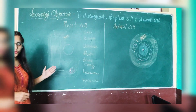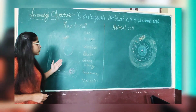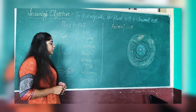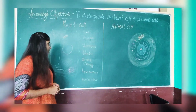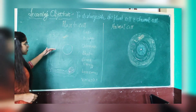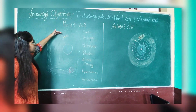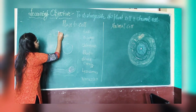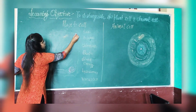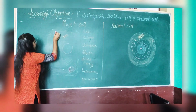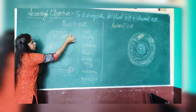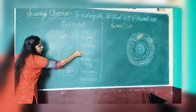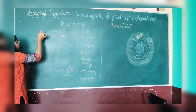In this way, we will be able to distinguish between a plant cell and an animal cell. Starting with the structure of a plant cell, the main difference between the structure of a plant cell and animal cell is that in case of a plant cell, the cell wall is present.